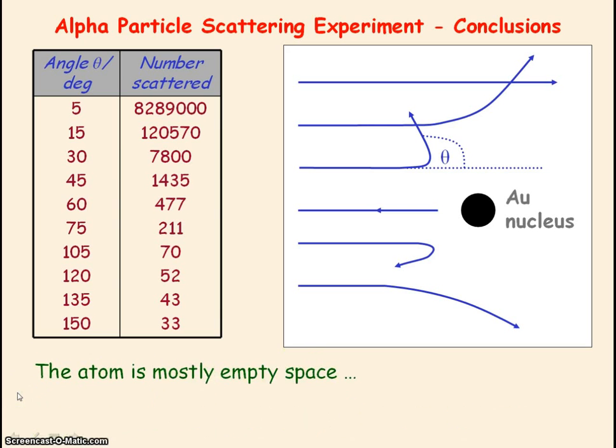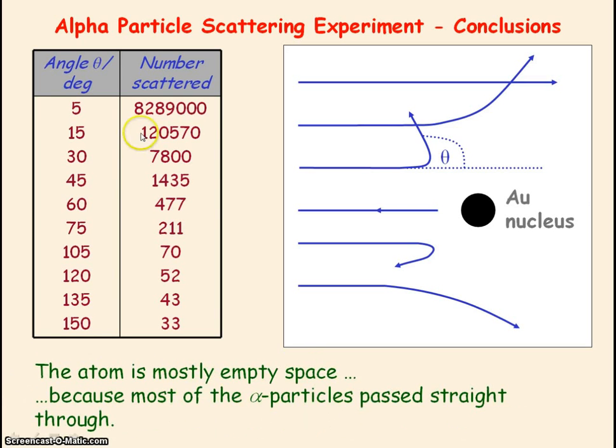The atom is mostly empty space because most of the alpha particles pass straight through. That is, most of the positively charged alpha particles were not coming close to the positively charged gold nucleus to be deflected.